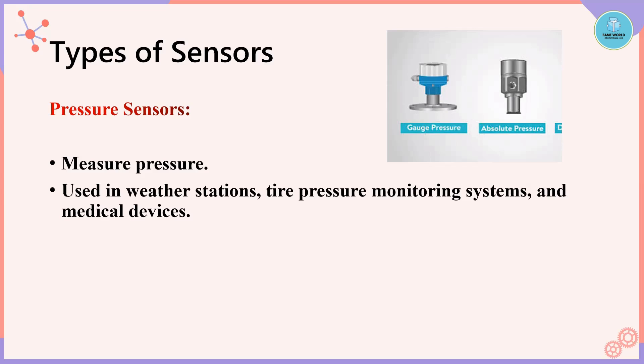Factors to consider when selecting a pressure sensor include: range — the pressure range it can measure; accuracy — how precise the measurement needs to be; environment — conditions such as temperature, humidity, and chemical exposure; and output — whether analog or digital format is required.